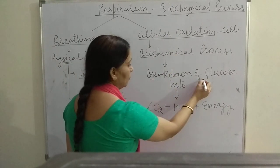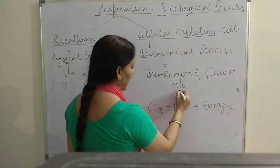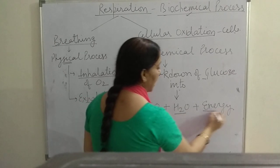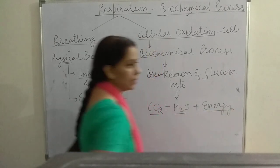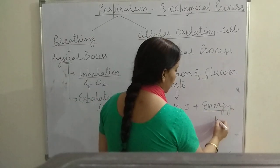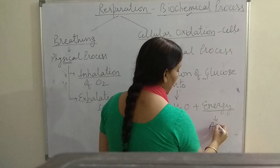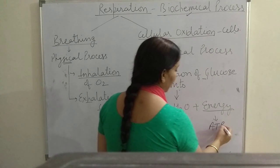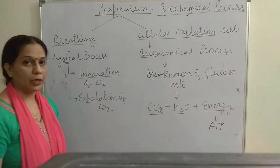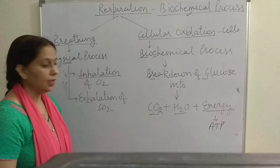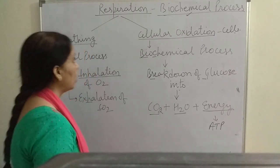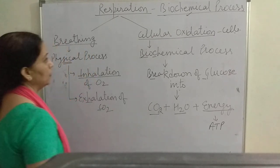During cellular oxidation there is breakdown of glucose into carbon dioxide, water, and energy is released. This energy which is released is stored in the form of adenosine triphosphate, or ATP molecules. ATP molecules are called the energy currency of the cells.